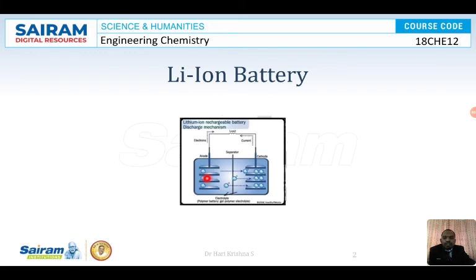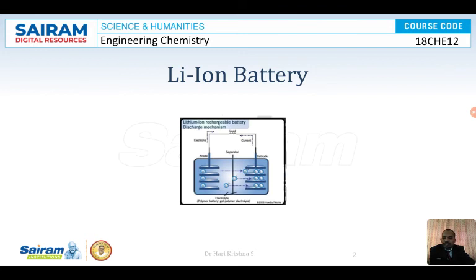This process continues until all the lithium present in the lithium cobalt oxide has accumulated in the layered solid graphite. Then the charging process starts. When you connect the battery to an external power supply, lithium ions in the cathode accept electrons, the reaction gets reversed, and lithium ions slowly move back towards the anode.